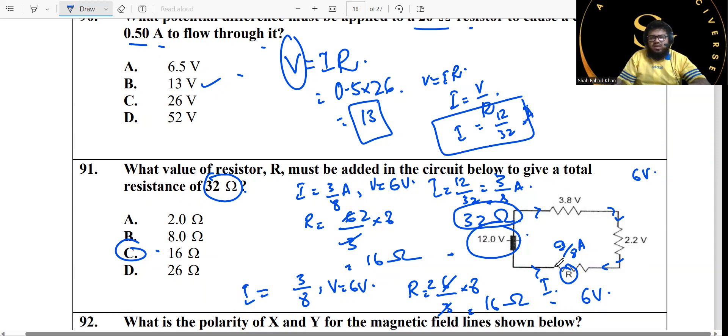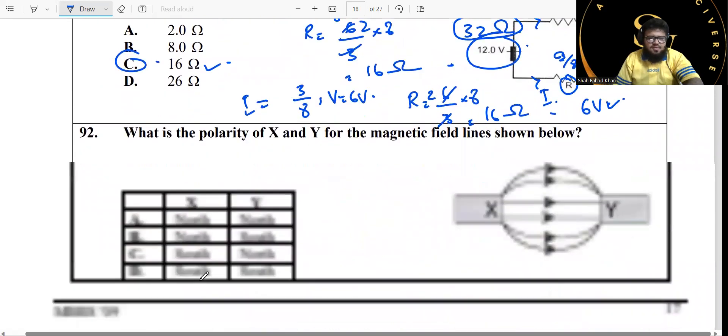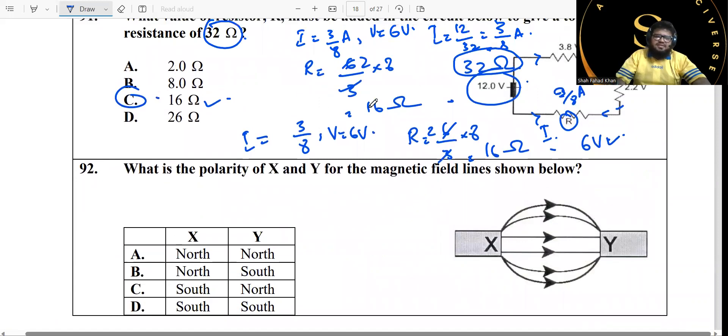So you have the total current that is flowing through it as well. Once you have the current, once you have the voltage, all you need to do is just find out the resistance again. R equals V over I, just simplify it, and you get an answer of 16 ohms. And that's it, yep that's correct.